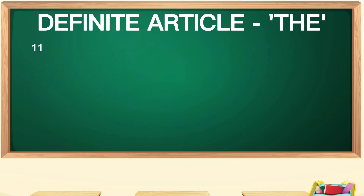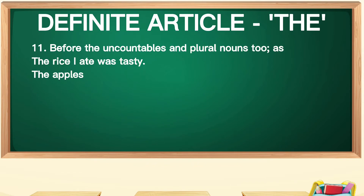The eleventh point: the is also used before uncountable and plural nouns. For example, 'rice' is uncountable — 'The rice I ate was tasty.' And for plural nouns — 'The apples are sweet.'